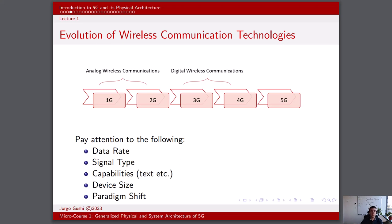And then we have the last generation, the current generation that we are using: 5G, or the fifth generation. This was introduced in the 2010s, with commercial rollout starting around 2019. It introduced peak data rates up to several gigabits per second using technologies like millimeter wave and sub-6 GHz. 5G offers ultra-fast internet speeds, low latency, support for massive IoT connectivity, and advanced applications like augmented reality and autonomous vehicles. The device size continues the trend of compact and powerful smartphones with 5G support.